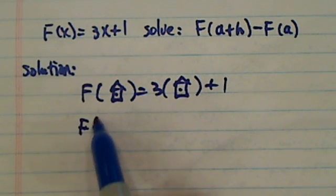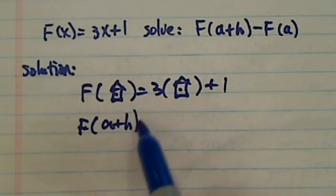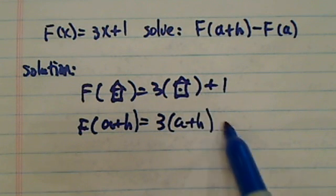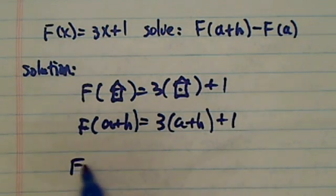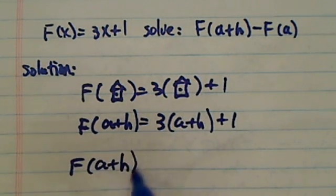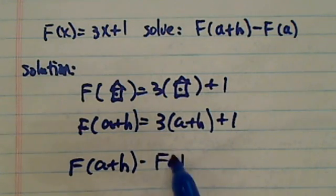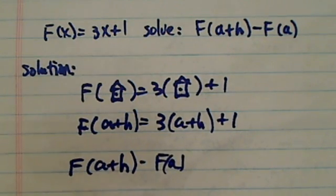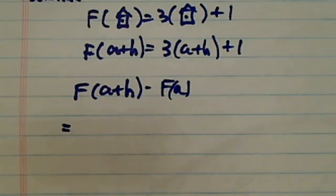So f of a+h, of course, is 3 times a plus h plus 1. So in order to find f of a+h minus f of a, we follow what we did before.